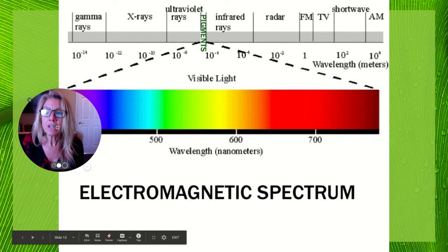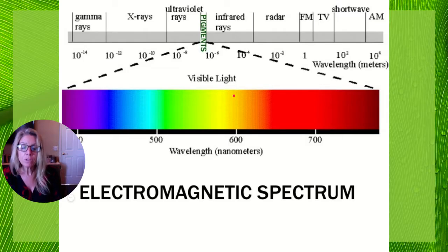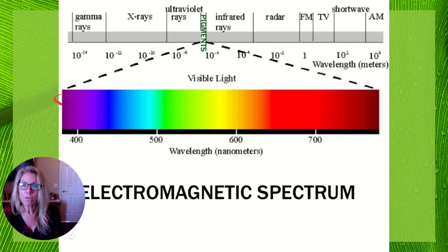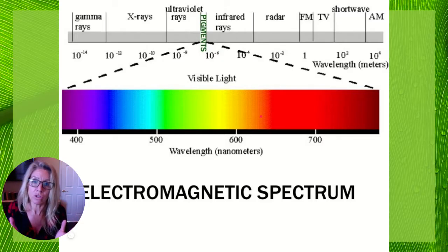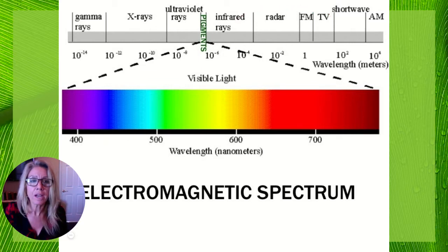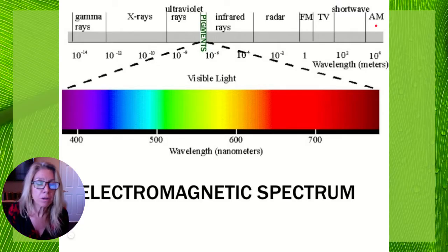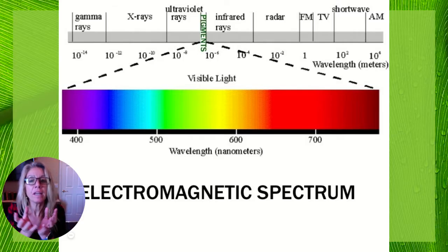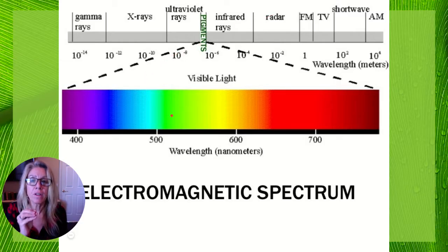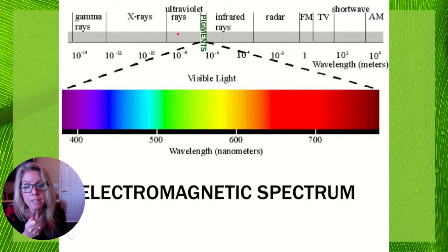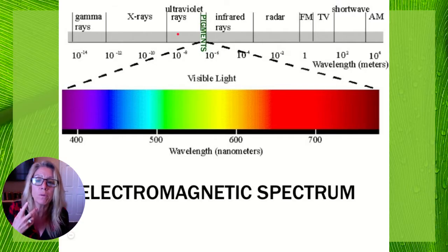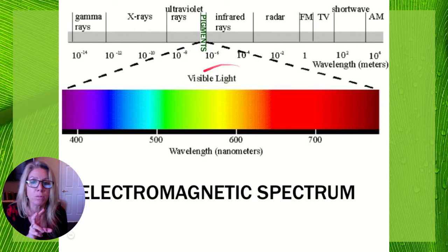Here is the entire electromagnetic spectrum. Visible light runs from about 380 nanometers to 740 nanometers — that's what plants use. The largest wavelengths are things like AM radio, which won't make your plants grow because they can't capture that size. Pigments are able to capture visible light energy and excite electrons using it. Plants are not using UV rays or x-rays — just the visible light.